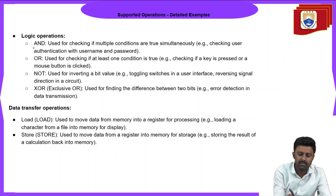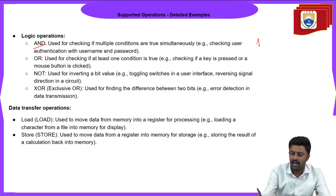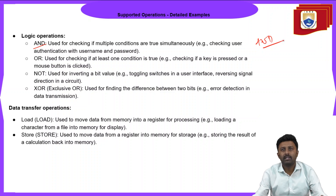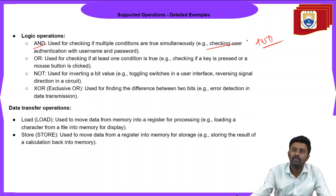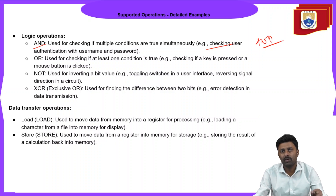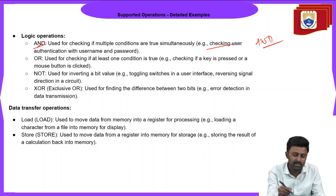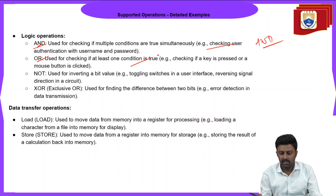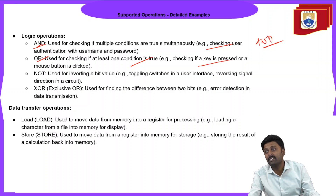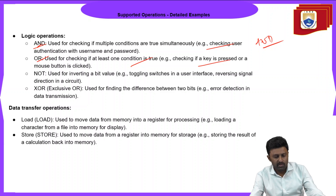For logical operations: the AND instruction performs a bitwise AND of two operands and is used for checking if multiple conditions are true simultaneously. A real-time example is checking user authentication with both username and password. The OR operation is used for checking if at least one condition is true — for example, checking if a key is pressed or a mouse button is clicked, where at least one condition must be true.